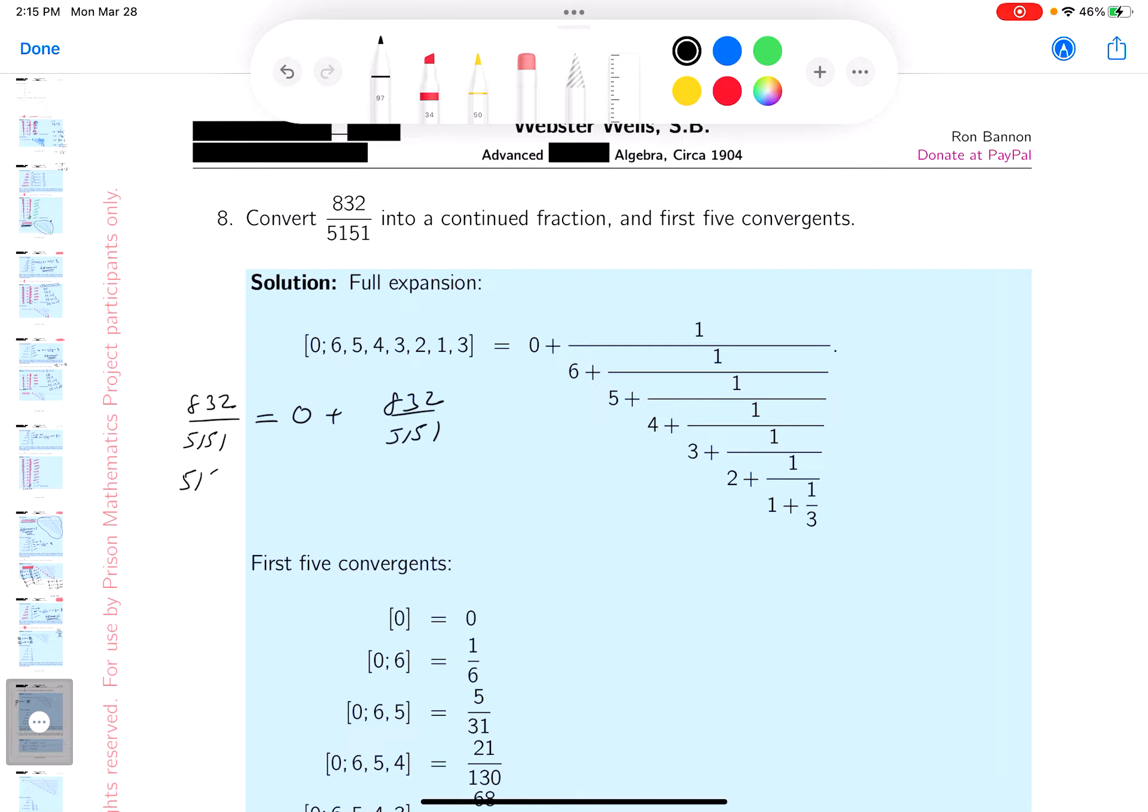Reciprocal, 5151 over 832 equals, well that goes in 6 times with the remainder.